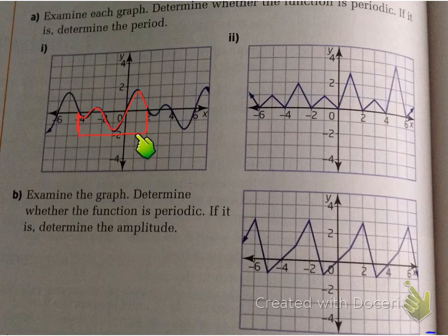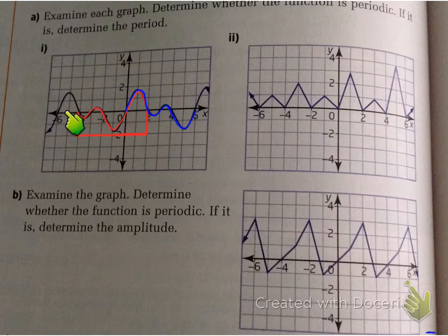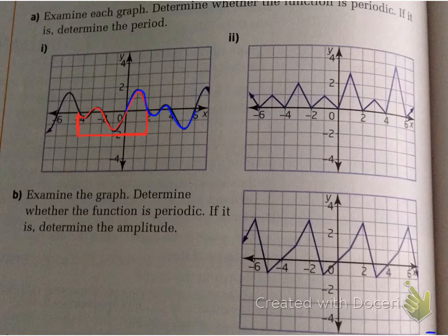We need to know the period of this function. The period is 6. I could have traced it anywhere — here's another example of another trace I could have done, starting over here and ending over there. Your trace, based on what you trace, will be what is marked. So the period is 6 units long.